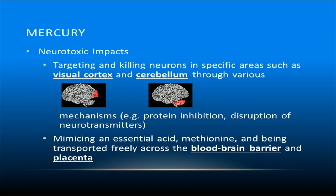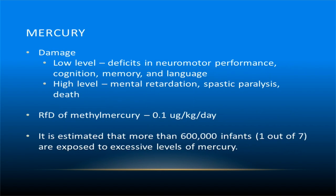Additionally, methylmercury can be combined with a kind of amino acid to produce a chemical that is recognized by our body as methionine, an essential amino acid. This allows it to be transported freely across the blood-brain barrier as well as across the placenta in pregnant women. The damage caused by exposure to low levels of mercury includes deficits in neuromotor performance, cognition, memory, and language. At high doses, mercury may lead to mental retardation, spastic paralysis, and death. The current reference dose of methylmercury is 0.1 microgram per kilogram of body mass per day.